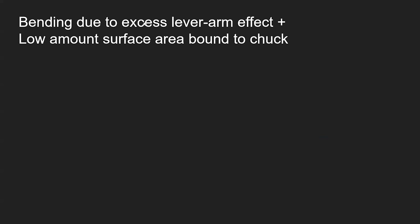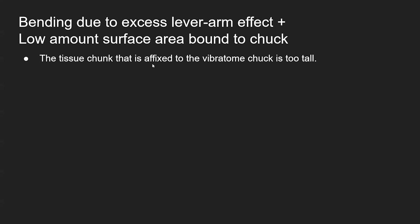Solutions. We see that bending occurs due to what we can call the lever arm effect. Another aspect is the low amount of surface area of the tissue or embedding medium that is actually bound to the Vibratome chuck — the little disc that people usually tape or glue tissue onto. If the tissue chunk — specimen plus embedding medium — is too tall, you want to make it shorter. Or if it's taller than it is wide or long especially, you want to make it shorter and wider if possible.